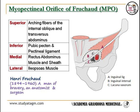The inguinal ligament runs in the center and obliquely divides the egg-shaped orifice into two parts. The upper one is called the inguinal interval, and the lower one is called the lacuna vasorum.